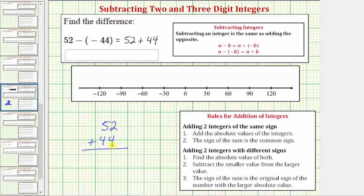and we start by adding the digits in the ones place value. Two plus four is six. In the tens place value, we have five plus four, which equals nine.